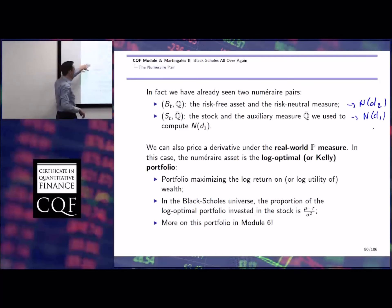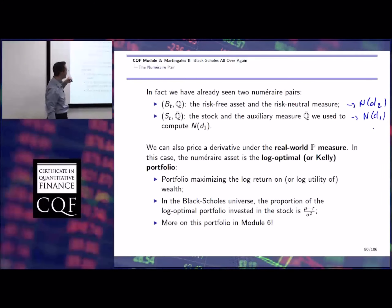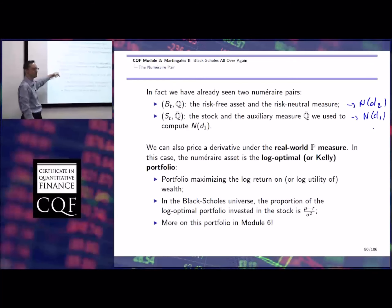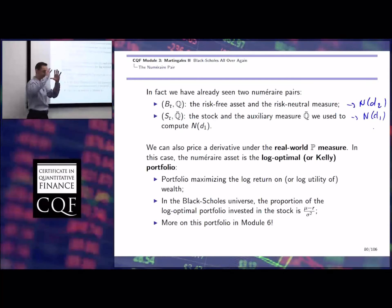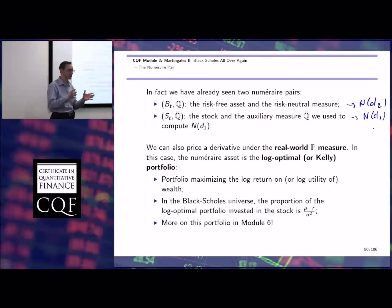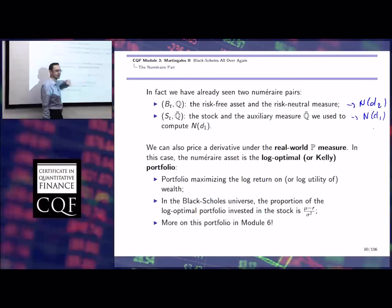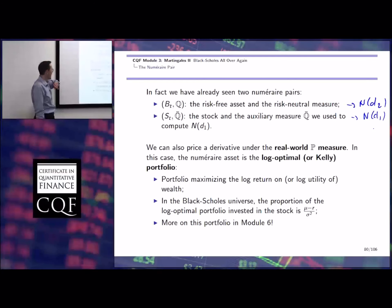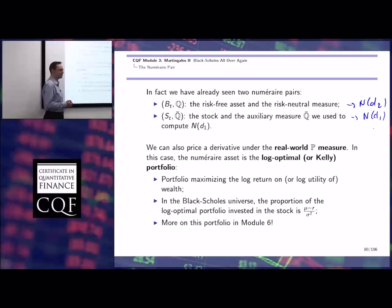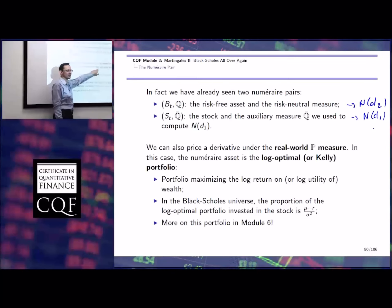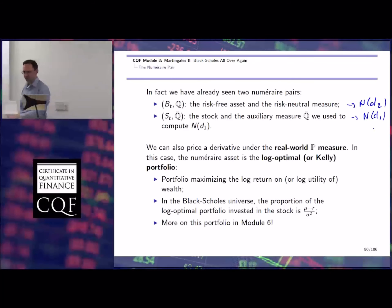For example, if you ask about pricing a derivative under the real-world measure P without changing measure, the appropriate discounting asset would be the log-optimal or Kelly portfolio. The Kelly portfolio is a fundamental concept in portfolio selection when dealing with dynamic portfolios, and it also pops up whenever we want to do pricing. The problem is that the Black-Scholes model is just too narrow to give us a good characterization of what that is, so we would not get a very accurate price.